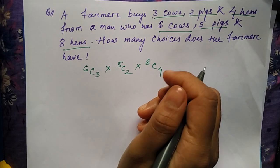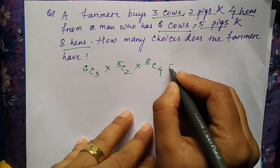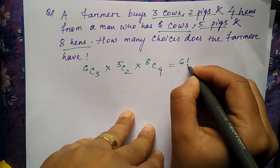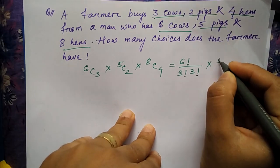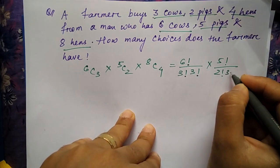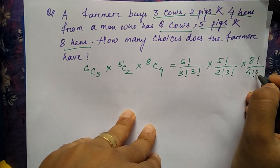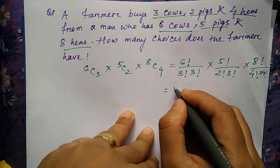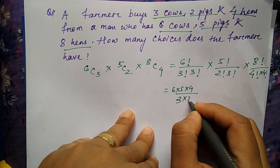So after you multiply, it will be like 6 factorial by 3 factorial into 3 factorial, into 5 factorial by 2 factorial into 3 factorial, into 8 factorial by 4 factorial into 4 factorial. So when you solve this, you'll be getting... you can ignore this one... 8×7×6×5×4×3×2...